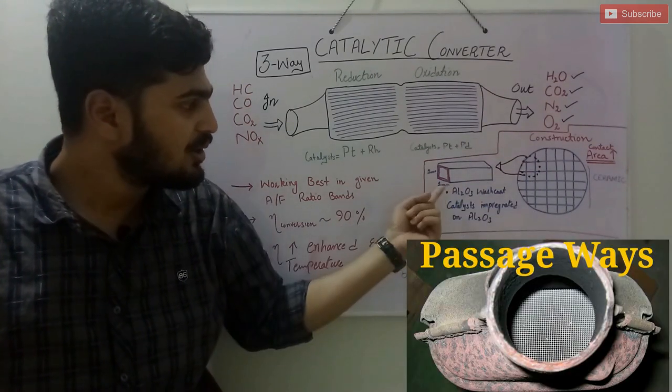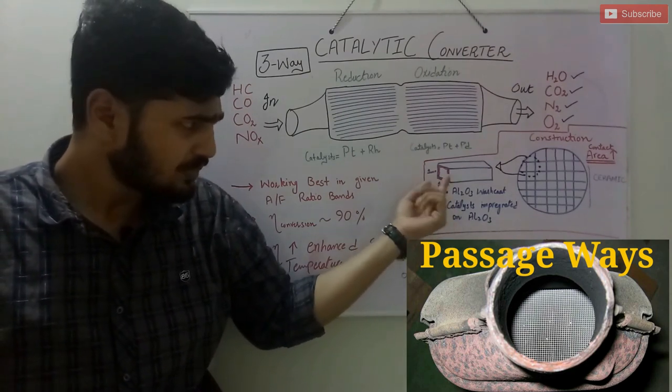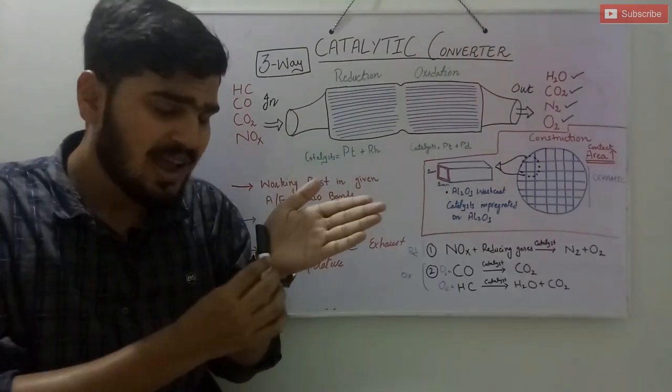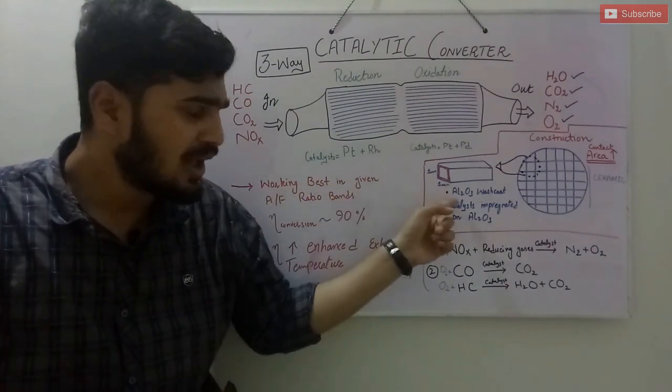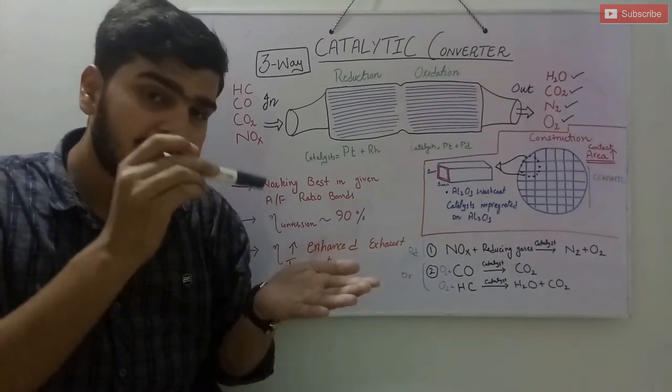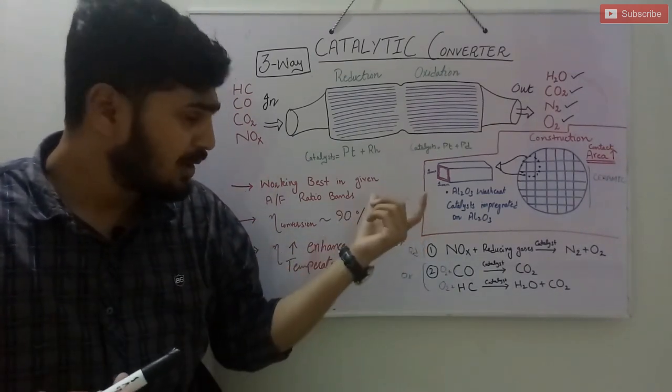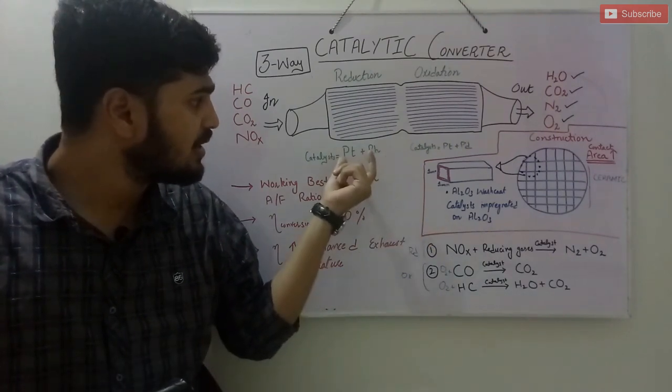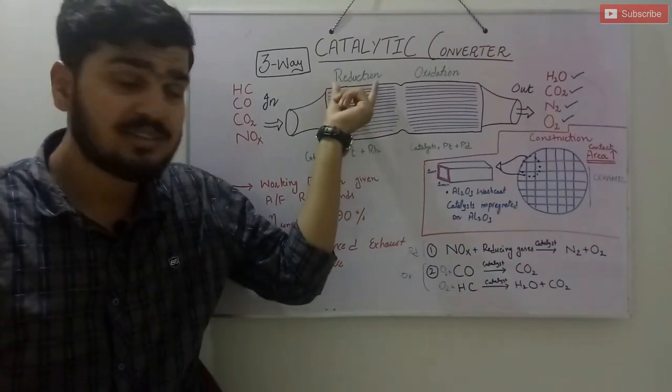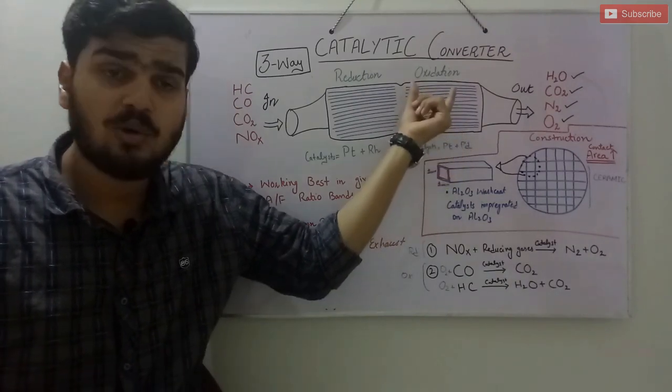If you closely look at a single passageway, you will see that each side is one millimeter, and in each passageway every wall is wash-coated with aluminum oxide (alumina). On this alumina, the catalysts are impregnated. The catalysts are precious metals: platinum-rhodium is the reduction catalyst and platinum-palladium is the oxidation catalyst.